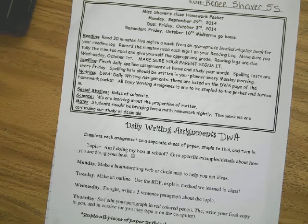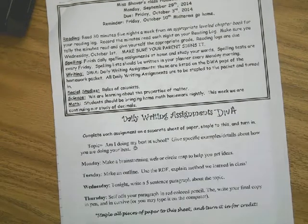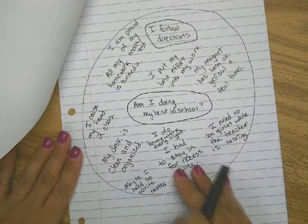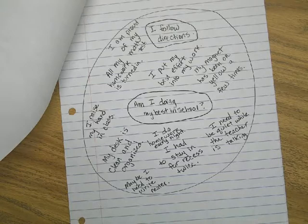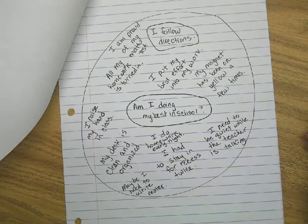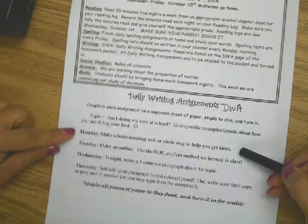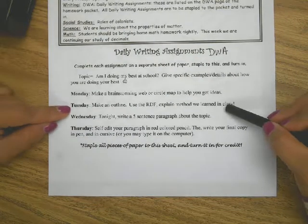All right, welcome to day two of your DWA. Yesterday, you should have done some sort of brainstorming. As a class, we chose to do a circle map. You could have done a web. Now that we've done some brainstorming, today we're going to work on Tuesday's assignment.